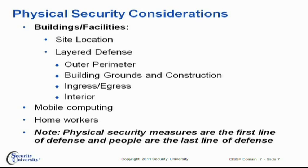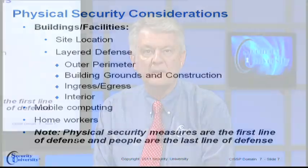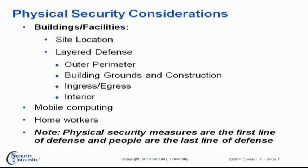Another key area is mobile computing. When your computing equipment and your data walks out of the building in an authorized manner, it's out there in harm's way — which also includes telecommuting when your employees work at home. A very important point: physical security measures are the first line of defense, and people are the last line. Physical security is there to protect the people and the data, but the people come first.